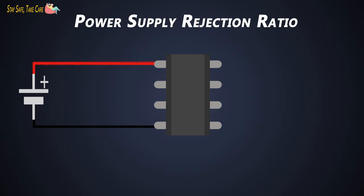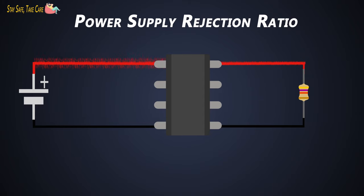The traditional way to specify the sensitivity of an analog IC to power supply variation is the Power Supply Rejection Ratio (PSRR). For an amplifier, PSRR is the ratio of the change in output voltage to the change in the power supply voltage.